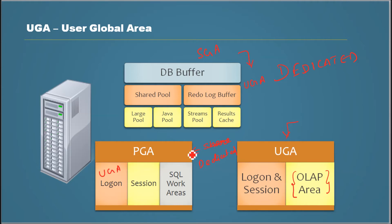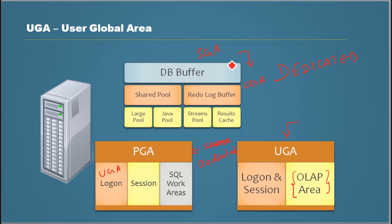In a shared server environment there is a lot of sharing going on, so it has to maintain session-specific information in a consistent location. That is why it uses the SGA for storing the UGA. Thank you for watching.